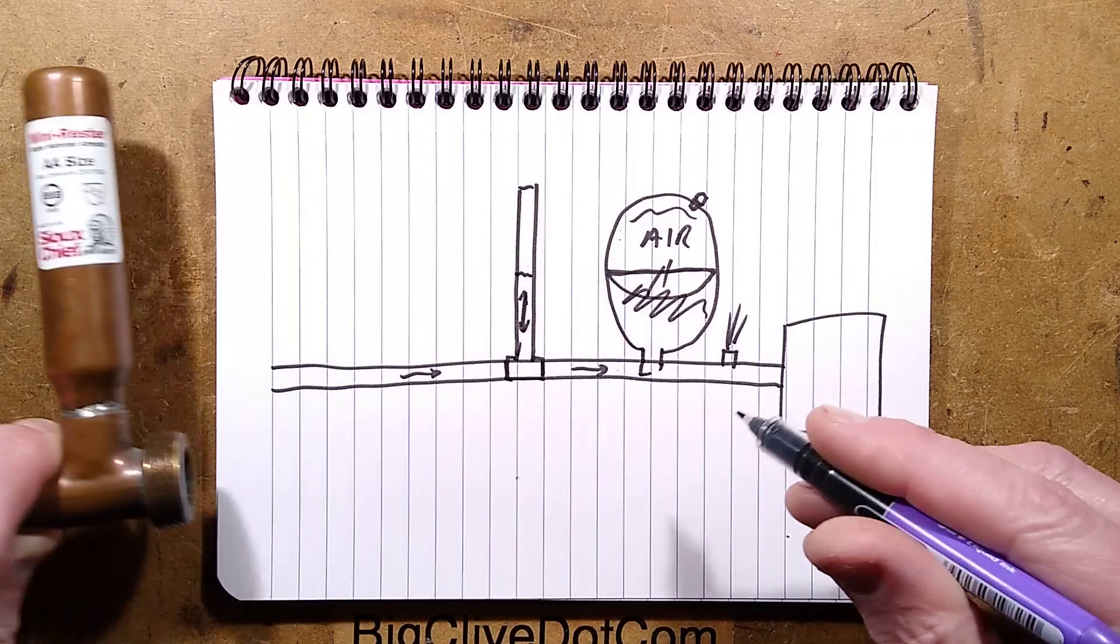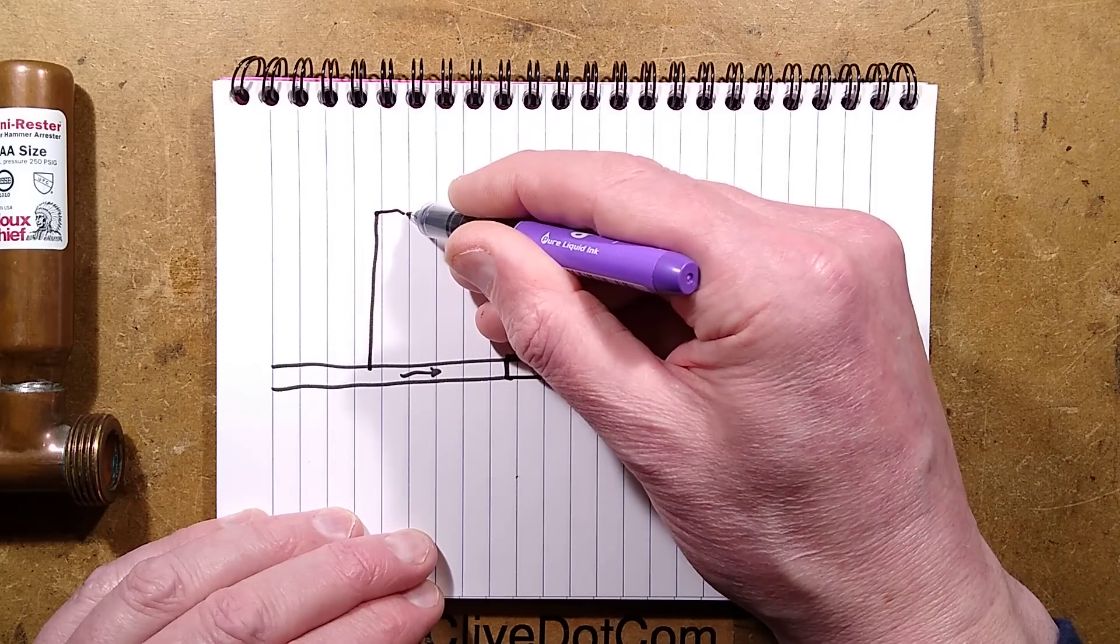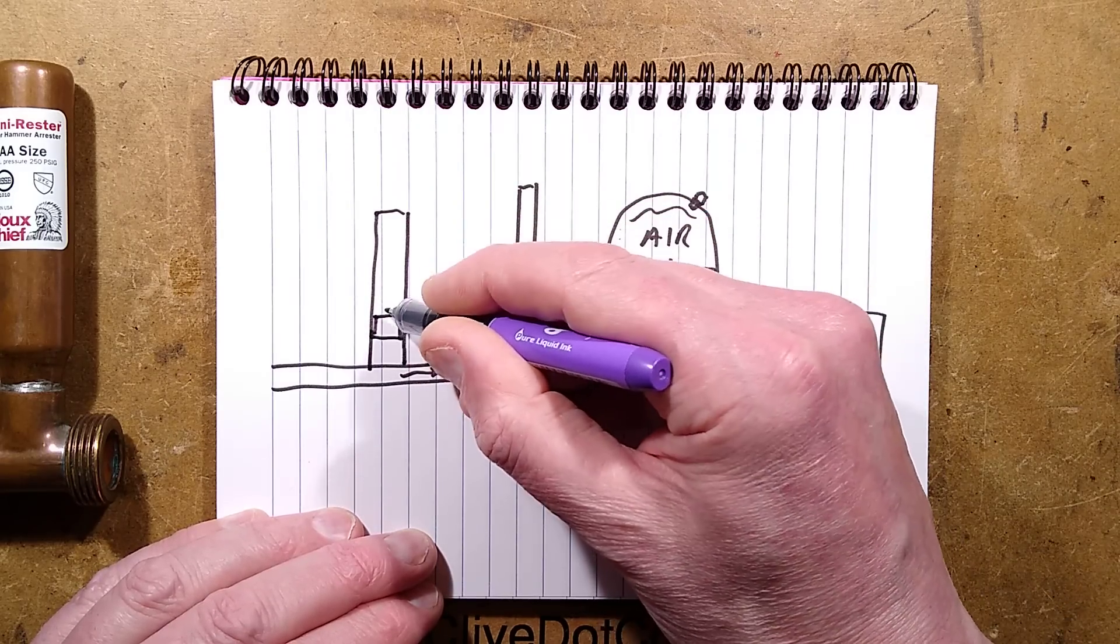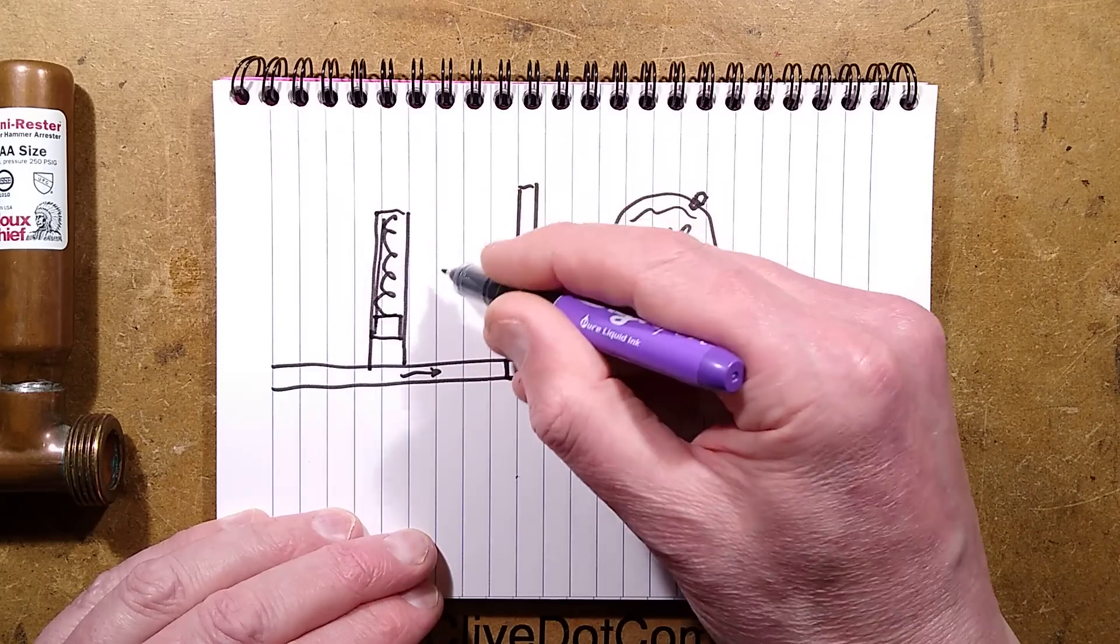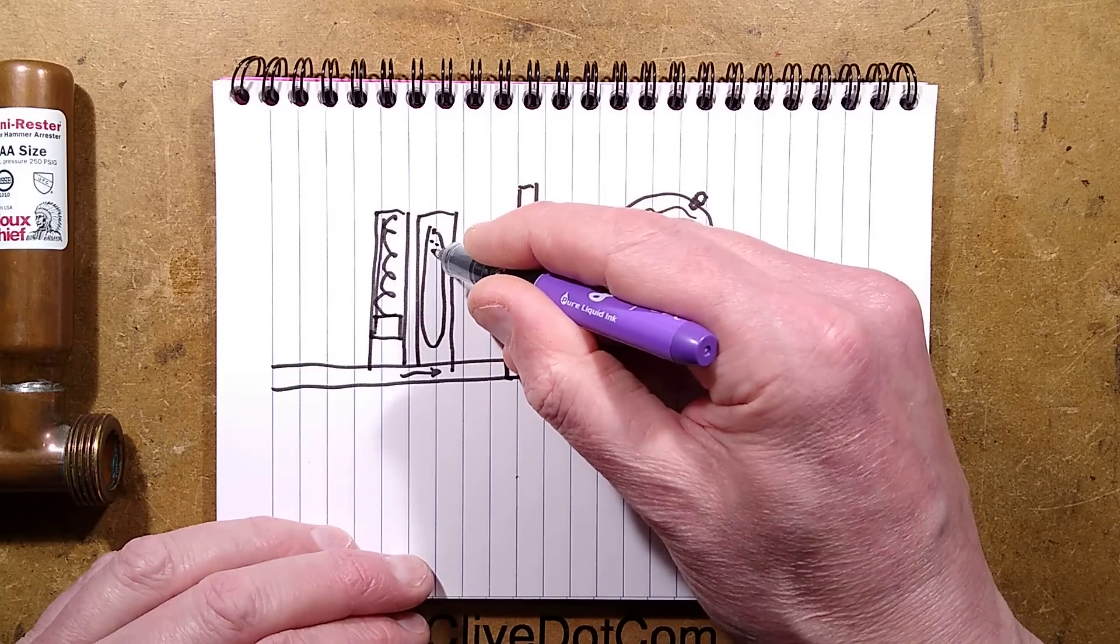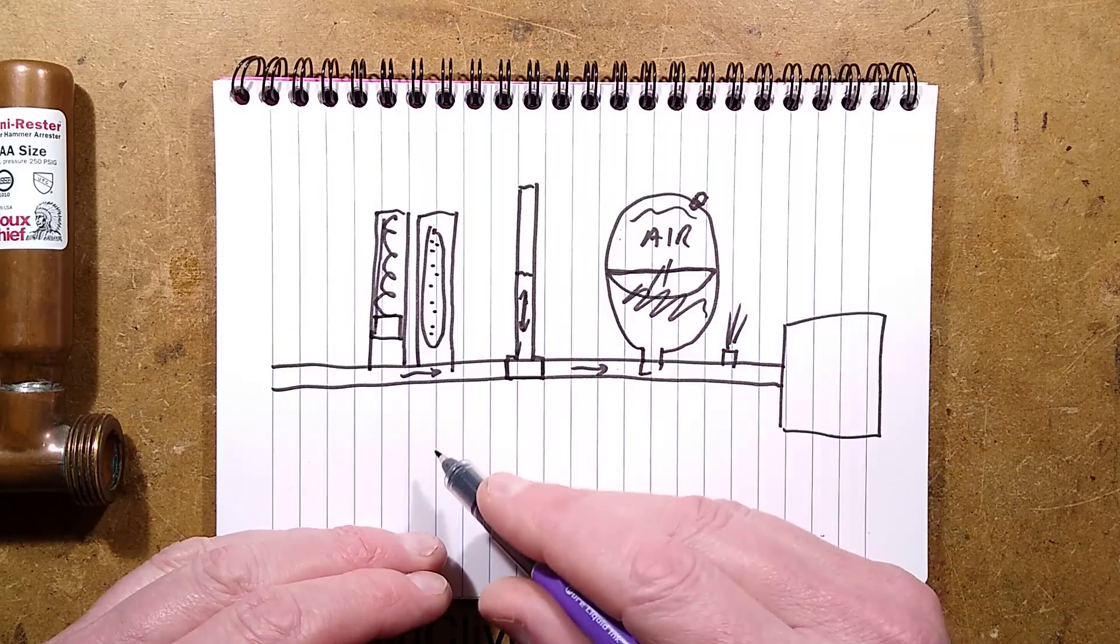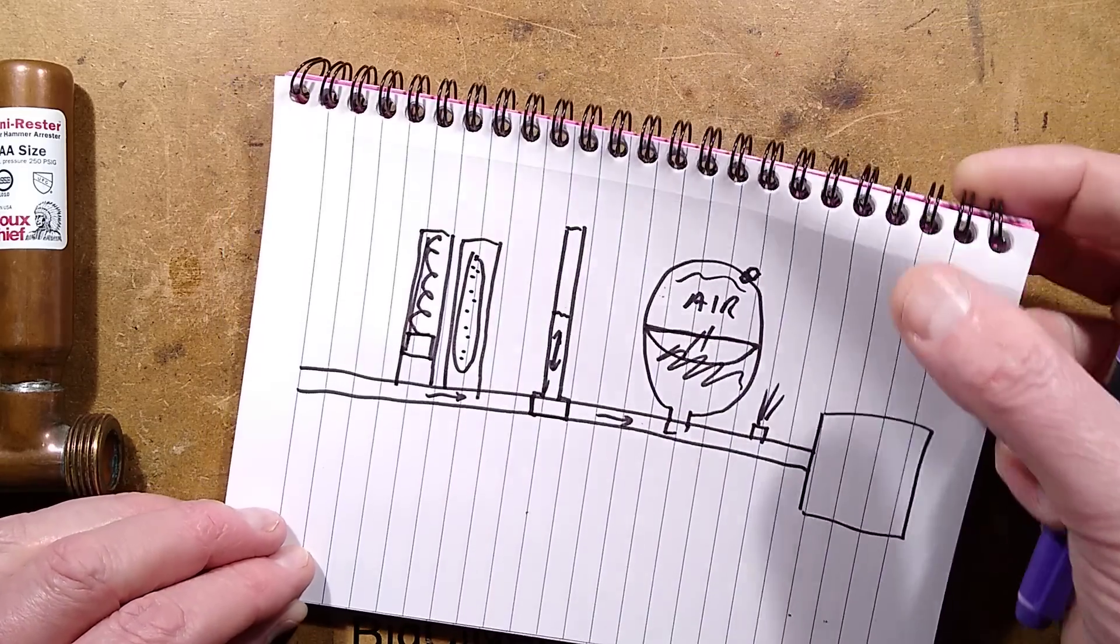But this is the Mini Rester—it tries to get around these problems. So this one goes in and I don't know what's inside this. It could be a little cylinder with a spring behind it, or it could be a bladder filled with just air or even granules, compressible granules, to just allow some sort of buffering of the water. But anyway, the only way to find that out is to open it, so let's open it.